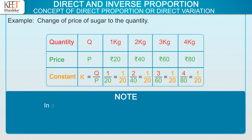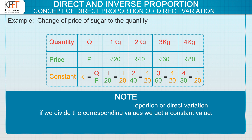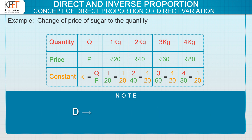Note, in any given example of direct proportion or direct variation, if we divide the corresponding values, we get a constant. So, a tip: D for direct, D for divide.